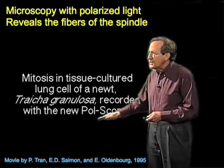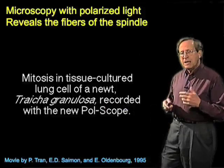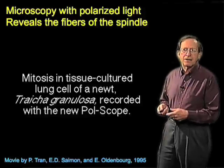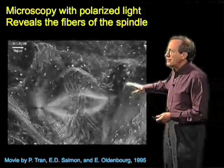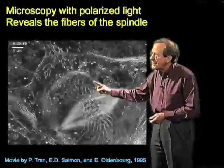This is a movie taken with a brand new kind of polarization microscope which gives a brightness reflecting the way in which polarized light is interacting with the cell, in such a fashion that it doesn't depend on the orientation of the object relative to the plane of polarization. This turns out to be important for getting a clear image, and the brightness is the polarization optical image of the spindle.